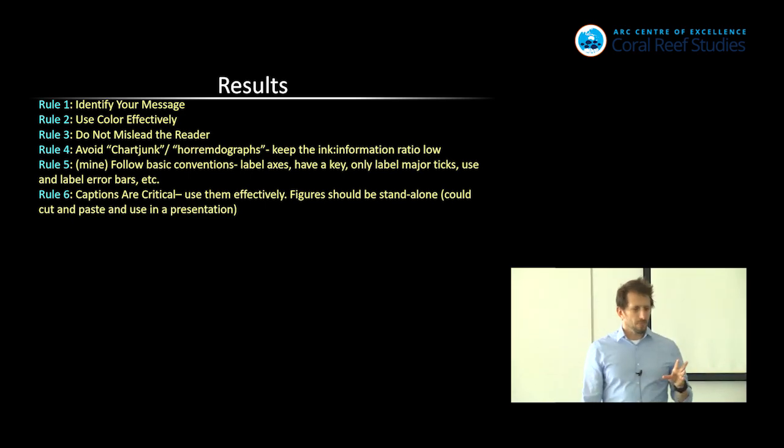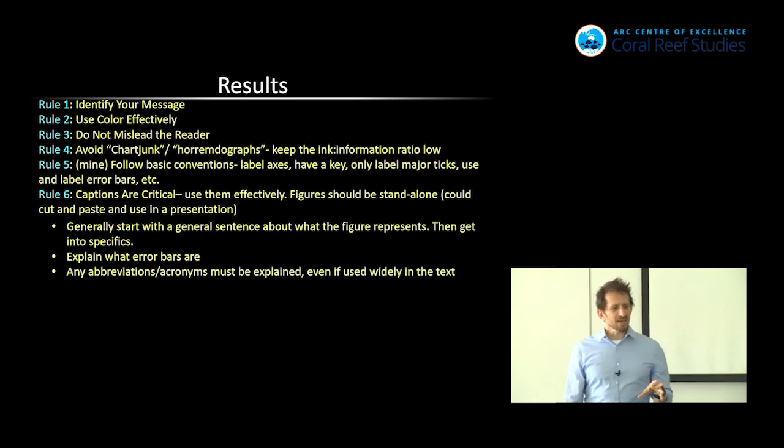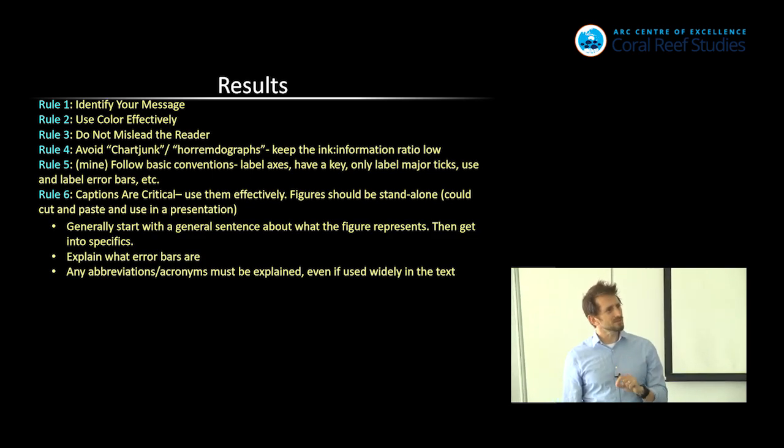So don't have things like acronyms in there. So the ways that I tend to do my figure legends is I start with a general sentence about what the figure represents, and then I get into the specifics of it. You explain what the error bars are. Are they standard error of the mean, 95% confidence interval, standard deviation? Any abbreviations or acronyms must be explained in the figure legend, even if you've used them a thousand times in the text, because someone might be cutting that out and they'll never know what it means if they've cut it out.